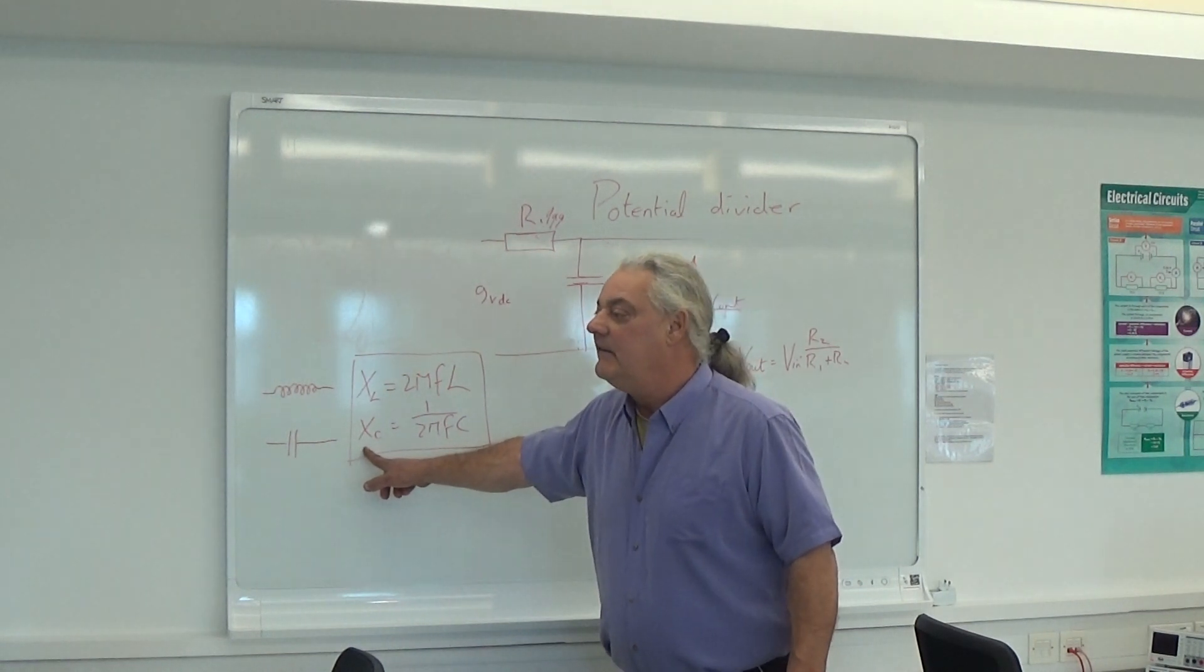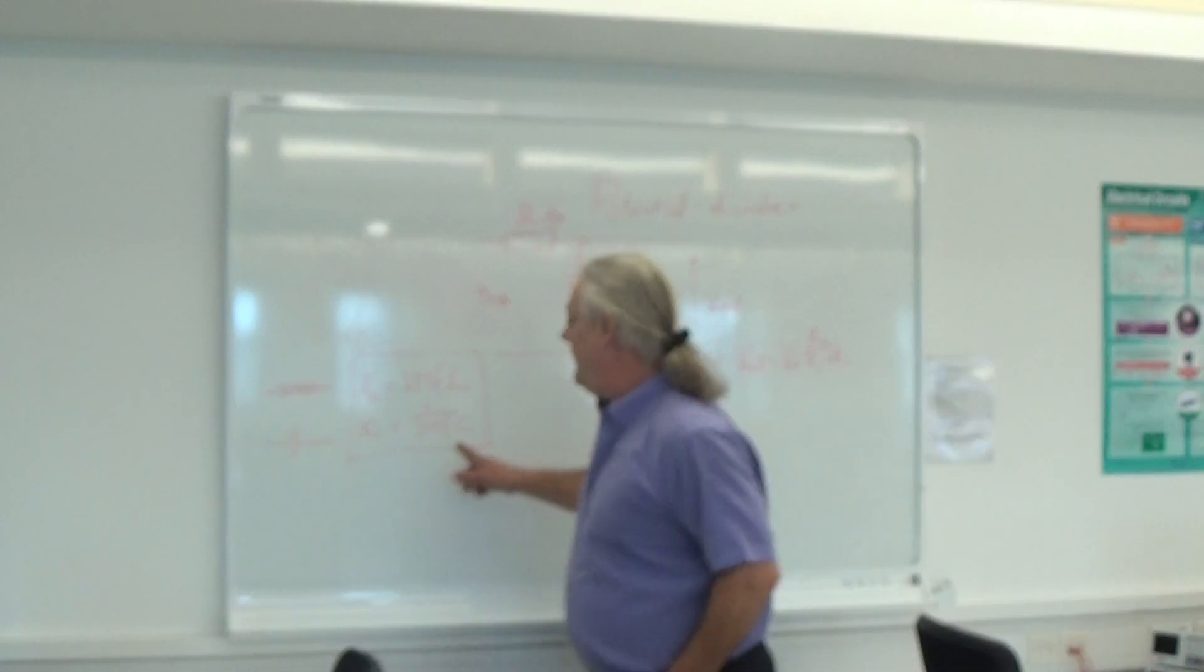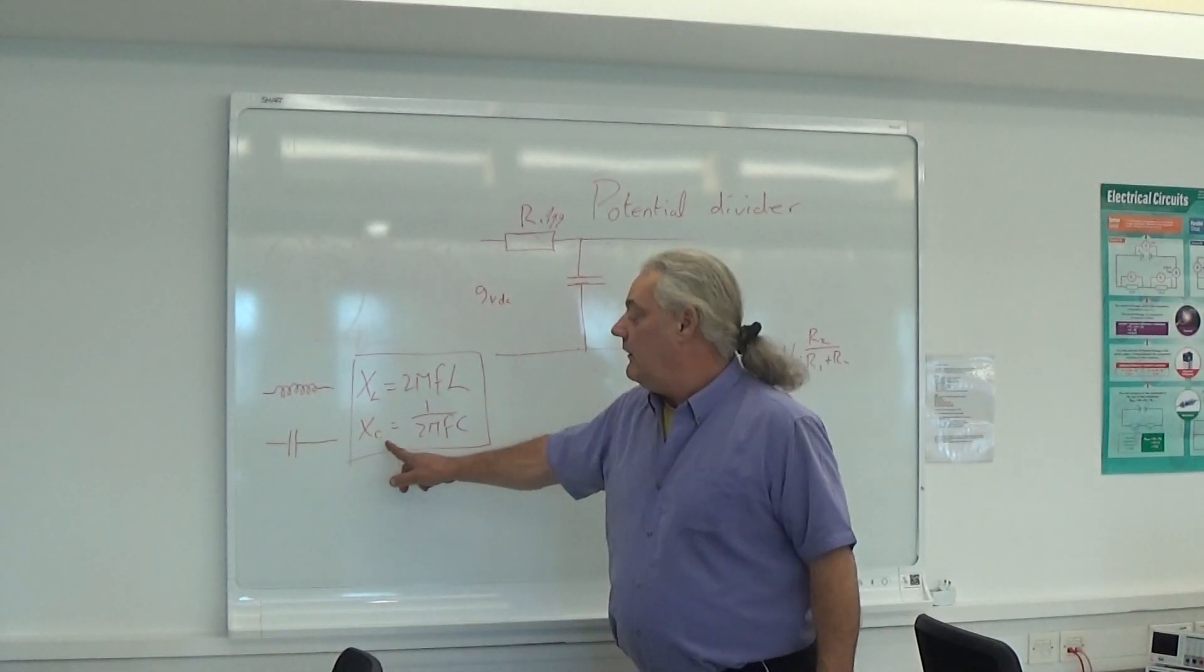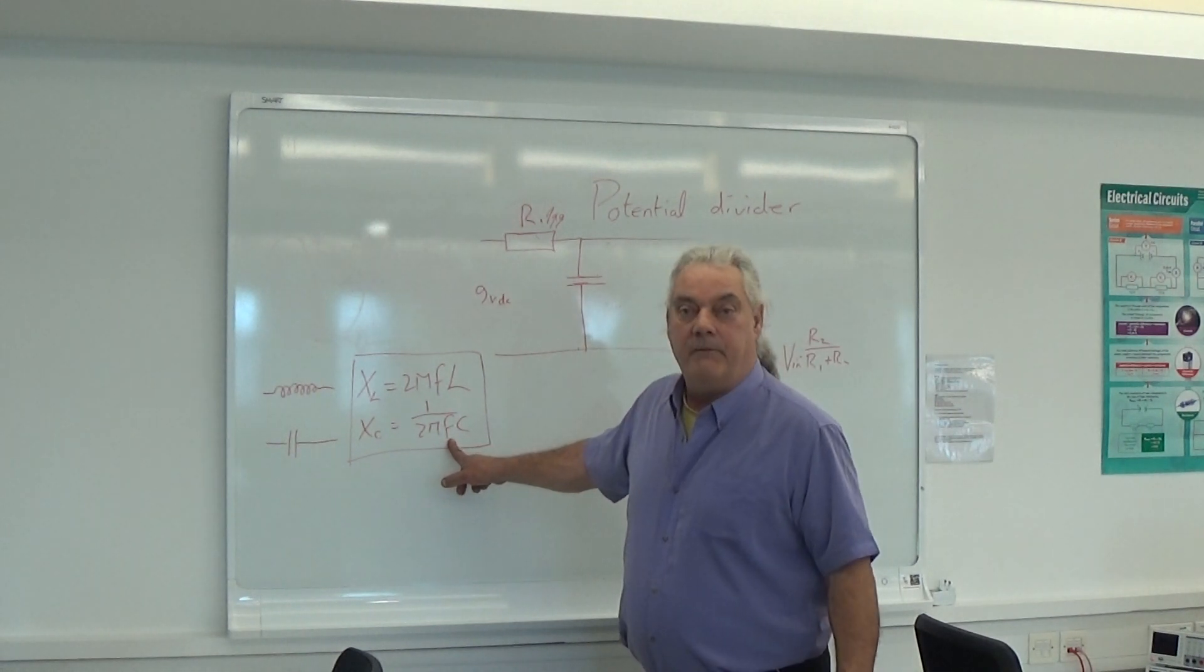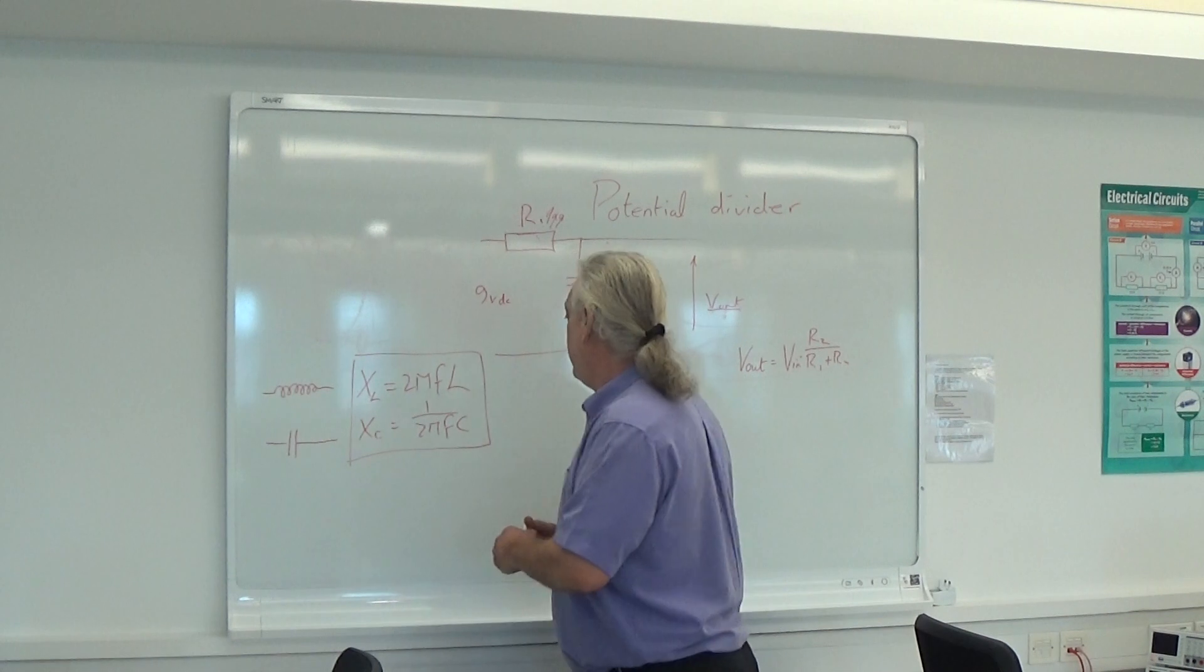XC? XC, brilliant. So if I make this very big, XC gets very small. If I make F very small, XC gets very big. Right, let's write that down.